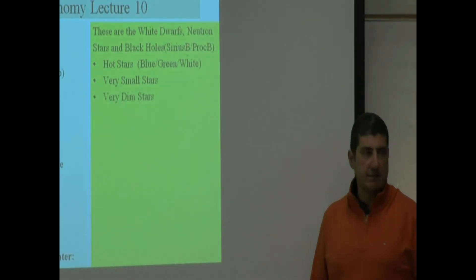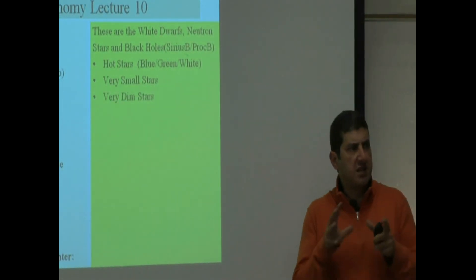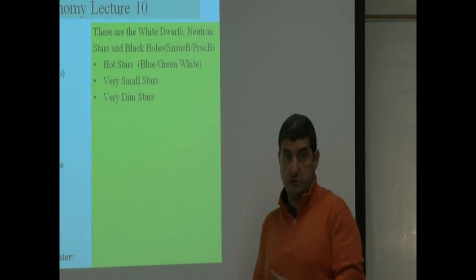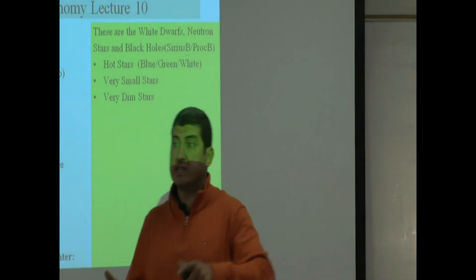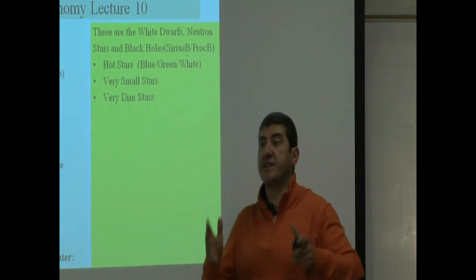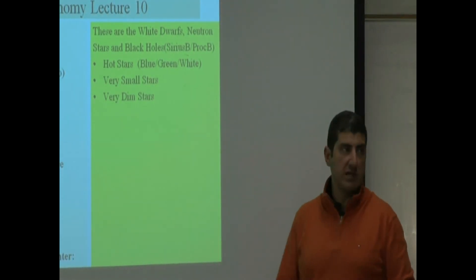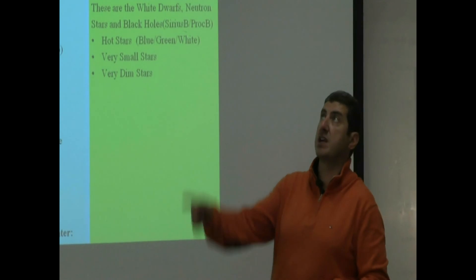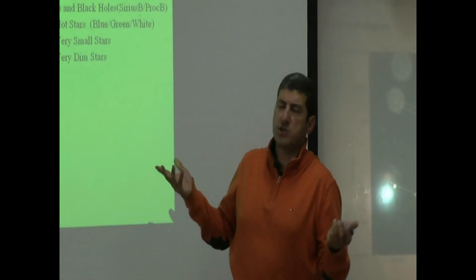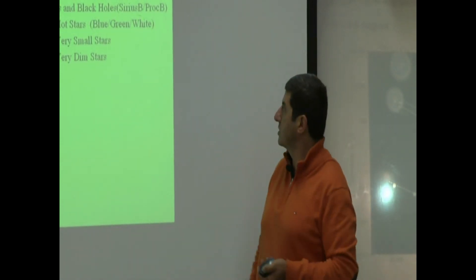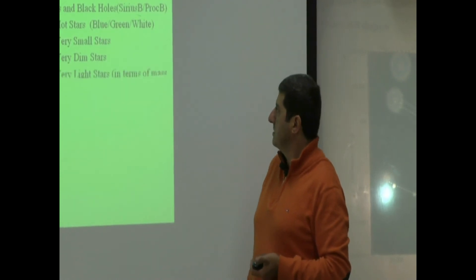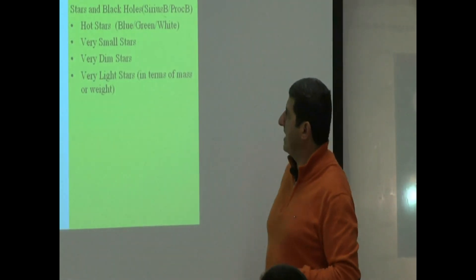They're very dim. The reason that they're dim is because they're so small. Even though they're hot, but the fact that they're small makes them very dim. So you can't really see them at night. You can't go out and say, oh, there's a white dwarf there. They're so small. You're going to barely be able to see it.